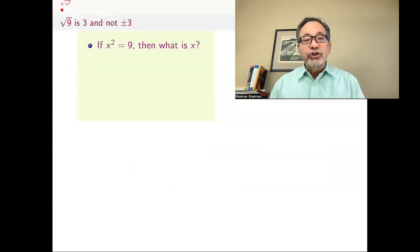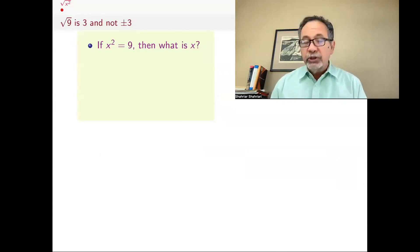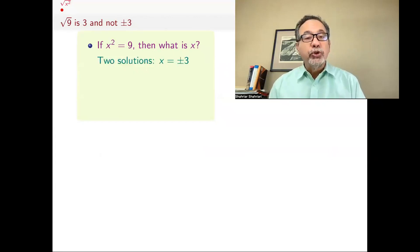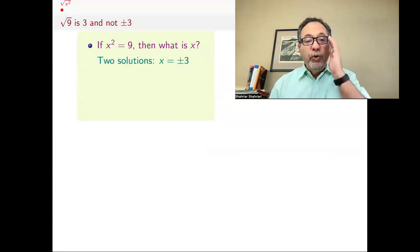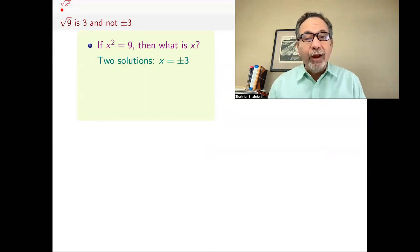If someone asks you what's x squared equals 9 and what is x — find the values of x for which this works — the answer is that there are two solutions. x could be 3 or it could be minus 3, because both of those, if you square them, if you multiply them by themselves, you get 9.